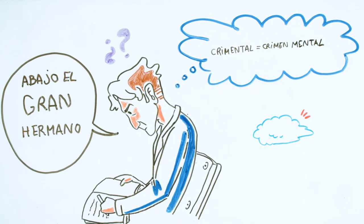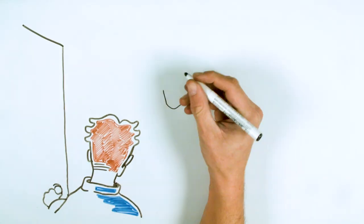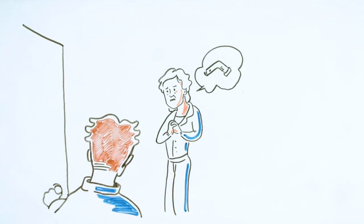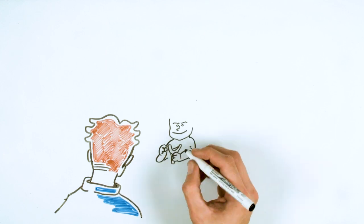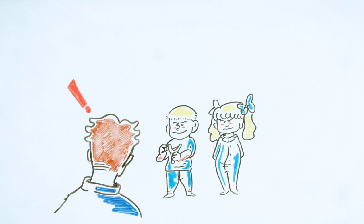Winston's thoughts were interrupted by a knock on the door. He quickly struggled to keep his blank expression and rose to open it. It was the lady neighbor called Parsons. She needed help with the sink. After fixing it Winston ran into her aggressive children, totally blinded by violence. Despite their young age, they scared Winston.